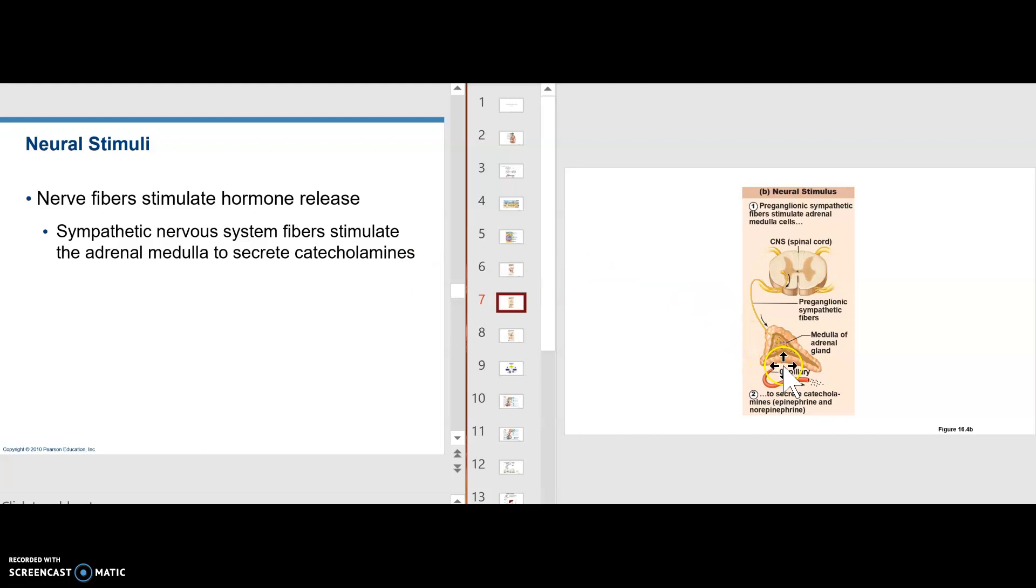But one way to get the adrenal medulla to release would be preganglionic fibers from the sympathetic nervous system would directly synapse on the chromaffin cells. Here we go. The chromaffin cells are in the medulla of the adrenal gland. And the chromaffin cells then would release epinephrine. So the sympathetic nervous system would stimulate the adrenal medulla to secrete catecholamines, primarily epinephrine. Now it can also secrete some norepinephrine because norepinephrine is a precursor to epinephrine.